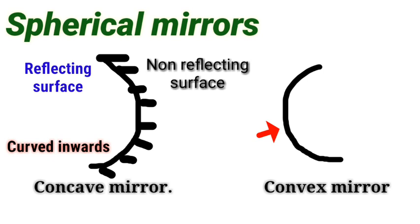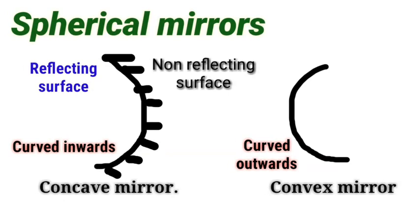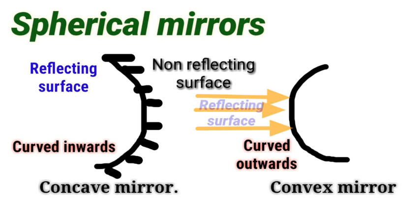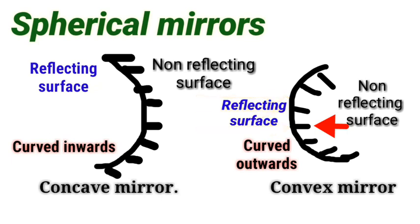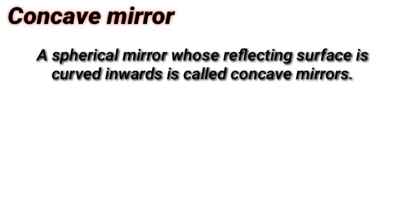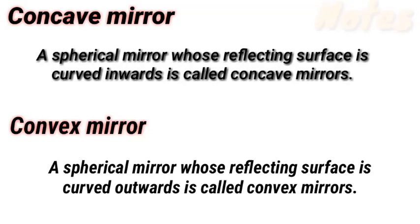For convex, the first part is curved outwards. This is the schematic representation. The curved outwards surface is the convex mirror, and the reflecting surface faces outward while the non-reflecting surface is behind.